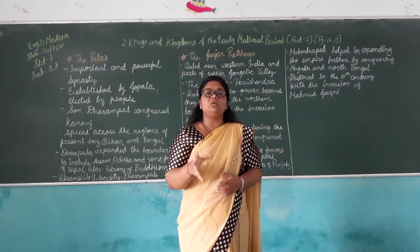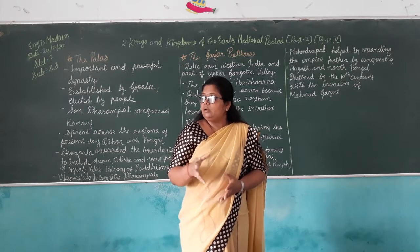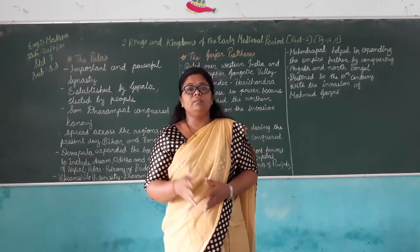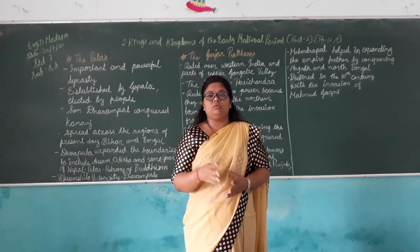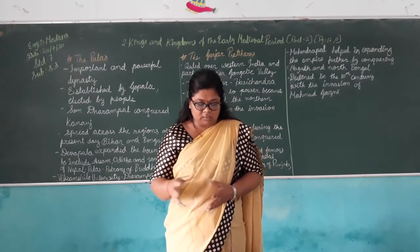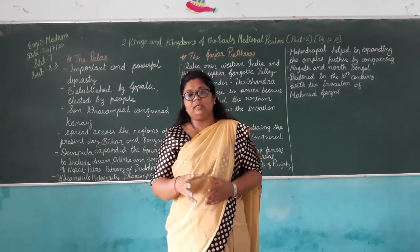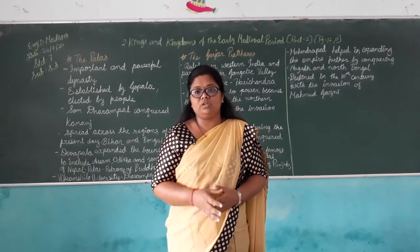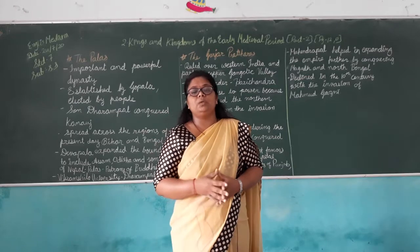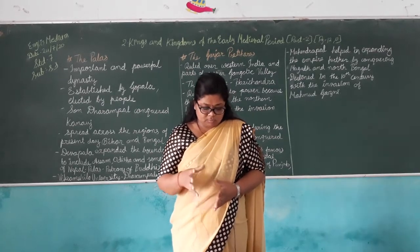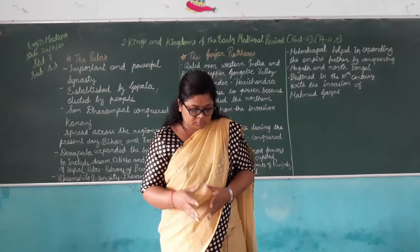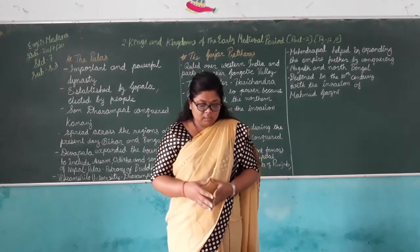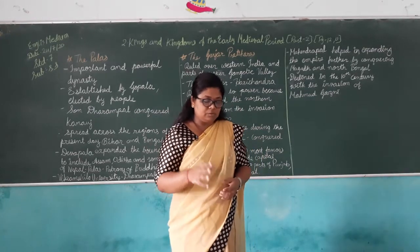The word Rajput is derived from the Sanskrit word Rajputra, meaning 'the son of a king.' The Rajput dynasties came from Suryavanshi, Chandravanshi, and Agnikul lineages. It was believed that the Rajputs originally came from Central Asia — groups such as the Shakas, Kushanas, Huns, and Gurjaras.